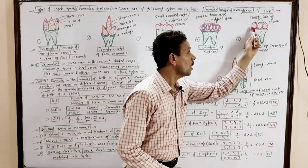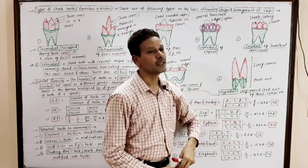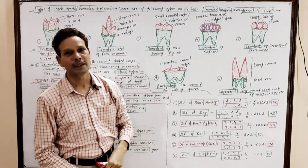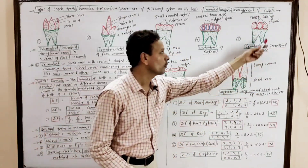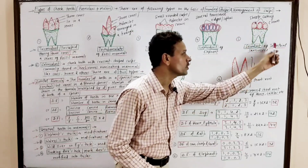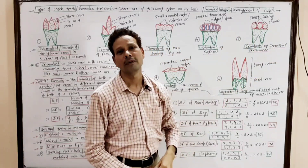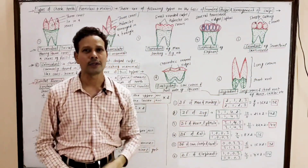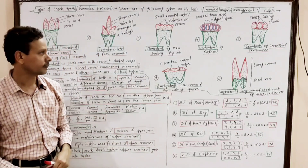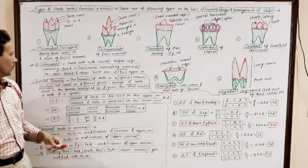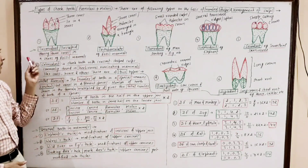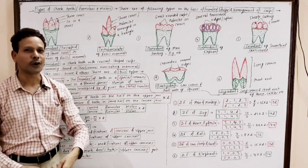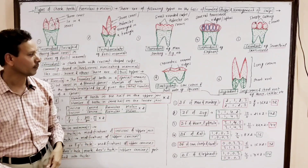The next type is secodont. In secodont, the crown possesses sharp cutting cusps. Such type of teeth are characteristics of terrestrial carnivores like lion and dog. The next type is selenodont.